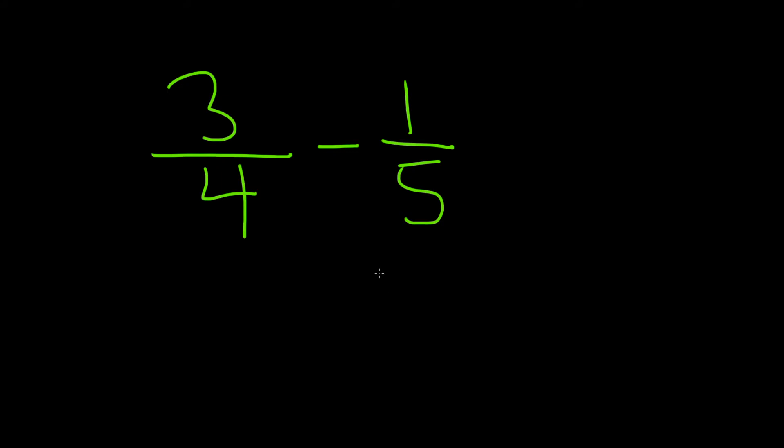To do that, what you can do is you just multiply the denominators. So you multiply the 4 times the 5, and that gives you 20. Okay, so the bottom is 20. So that's going to be our denominator.